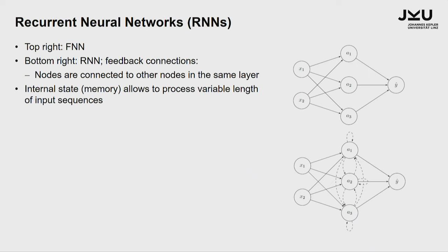Another very important architecture are so-called recurrent neural nets, RNNs. In a feedforward net we have X1, X2 as input, then a hidden layer with activations A1, A2, A3, and an output. In a recurrent neural net, in every time step, you allow feedback from every node of the hidden layer to itself and every other node in the hidden layer. So the nodes are connected to each other in the hidden layers, which allows for some kind of internal state or memory.